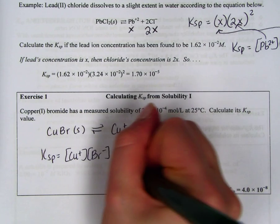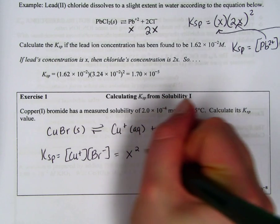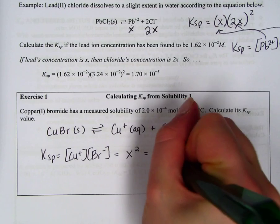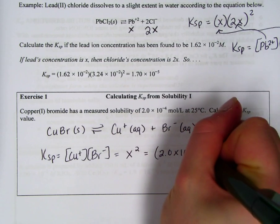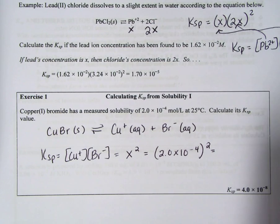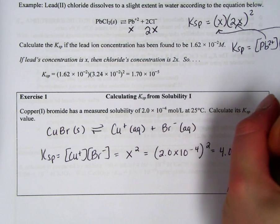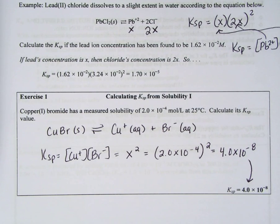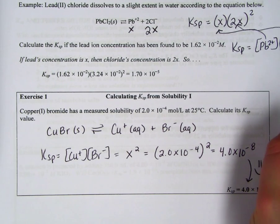So that means x is 2.0 times the negative 4th. And I have to square that. And when I do that, I get 4.0 times 10 to the negative 8th. And the great news about this packet is I can check my answer and I am good to go.